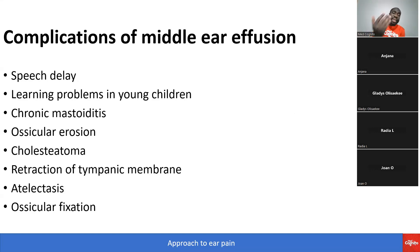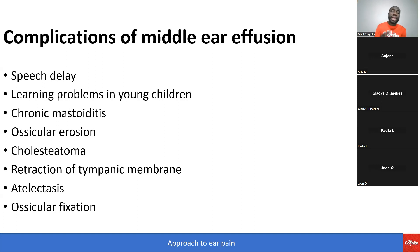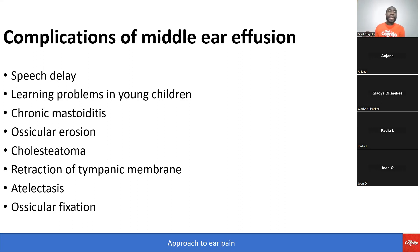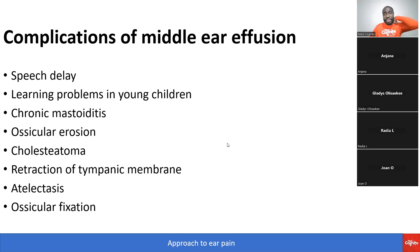What are the complications of middle ear effusion in children? They may have speech delay, learning problems, and chronic mastoiditis. They may have ossicular erosions, cholesteatoma, retraction of the tympanic membrane, atelectasis in the middle ear, and ossicular fixation — where the three bones of the middle ear become fixated to each other.